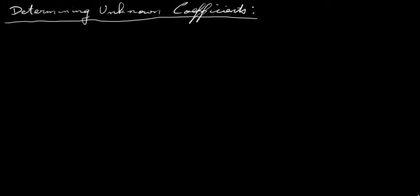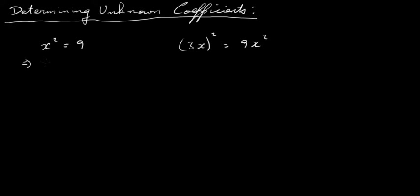In this video I'm going to have a look at determining unknown coefficients. First, before I start, I just want to look at something like this. Let's say x squared is equal to 9, and then something like this: 3x all squared is equal to 9x squared. Now, these both might look similar, but this one here is called an equation. There are only two solutions — if you square root both sides, you get plus 3 or minus 3. So there are only two solutions to this equation.